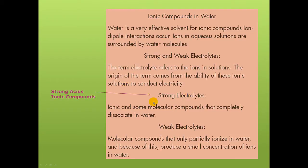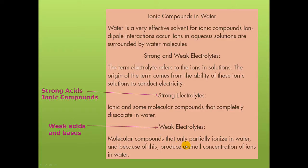Strong electrolytes are things like strong acids and ionic compounds that do dissolve in water. When dissolved, they completely dissociate into ions. Weak electrolytes, on the other hand, do not completely dissociate — they will only partially dissociate into ions or partially ionize. Some examples are weak acids and weak bases.